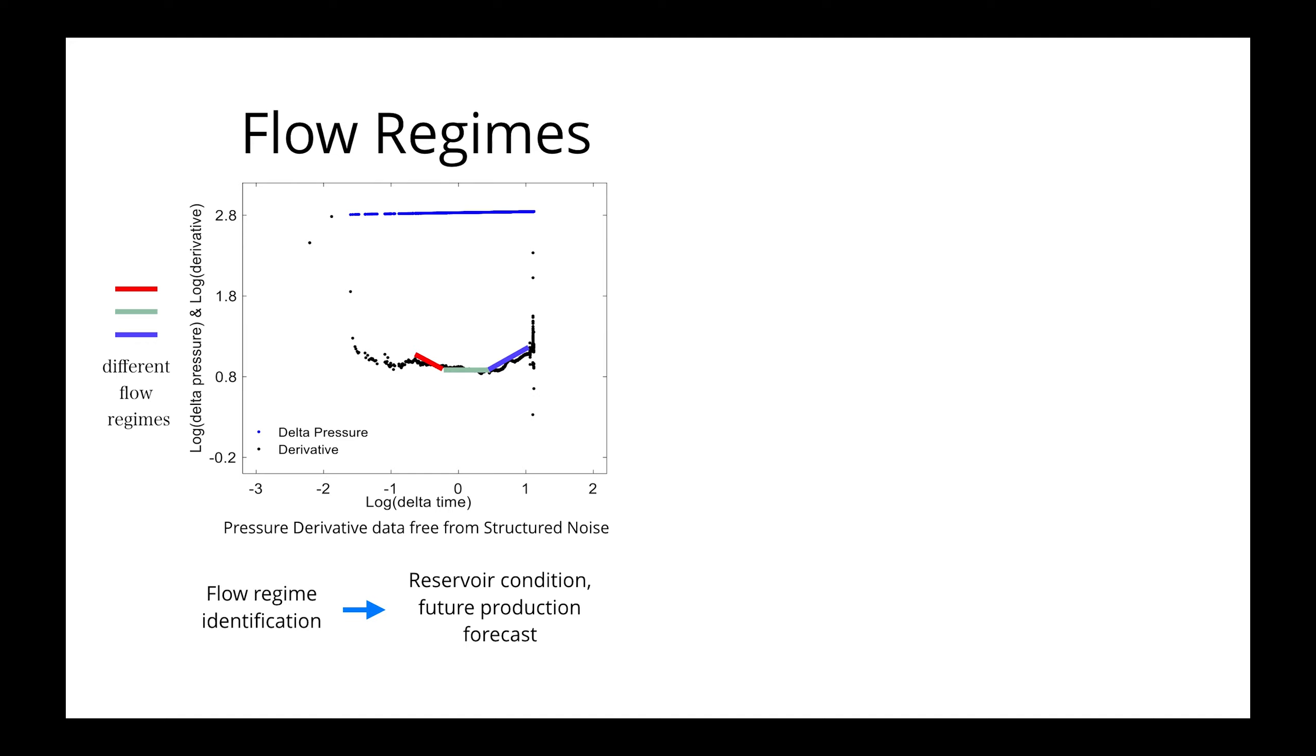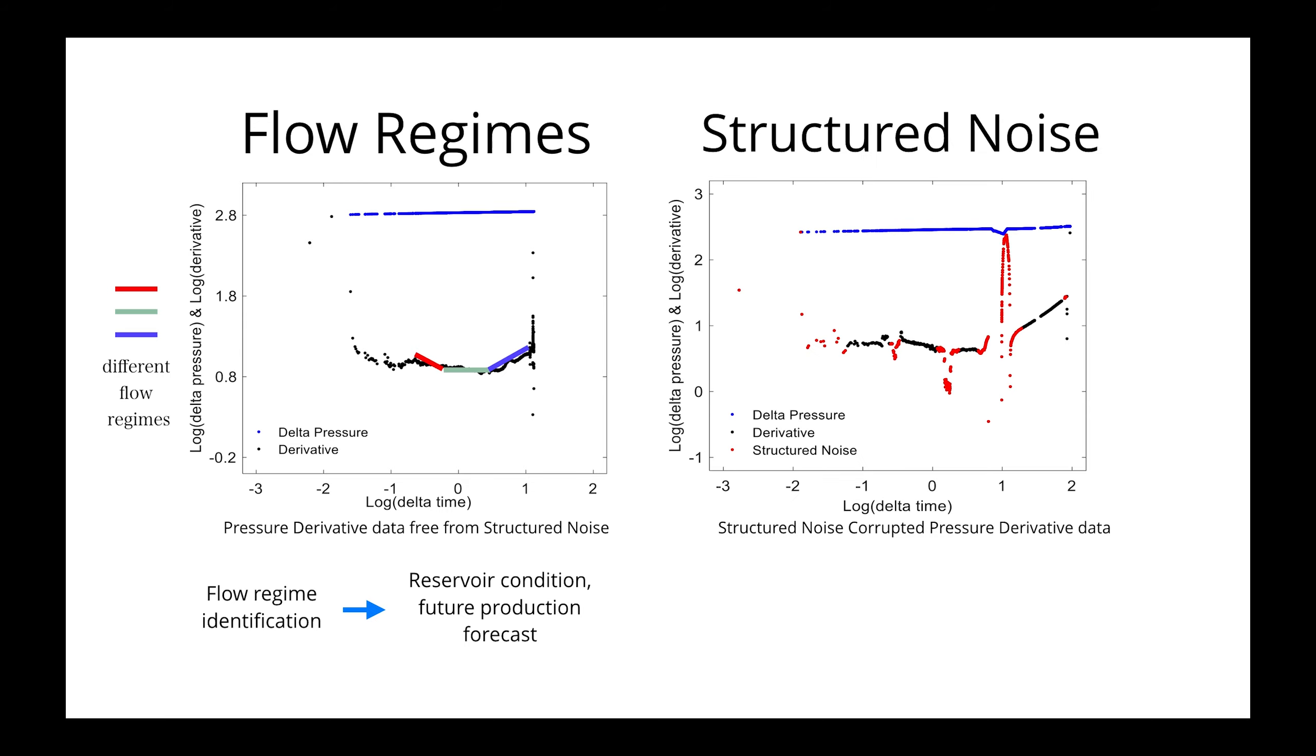One of the main impediments of automated flow regime identification is the presence of structured noise. In the context of pressure transient analysis, structured noise refers to the pressure response to non-reservoir origin phenomena that maintain similar structure in different observations.